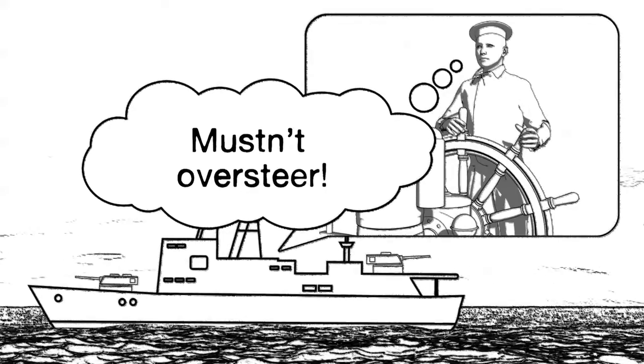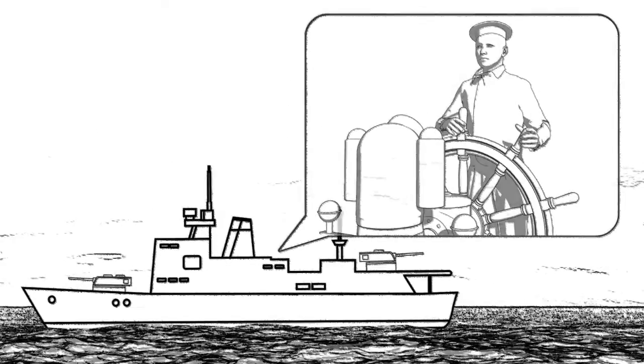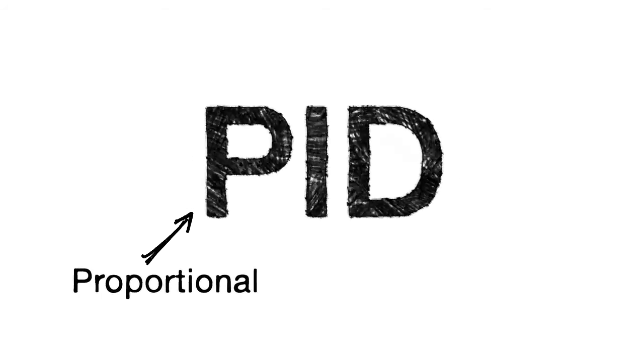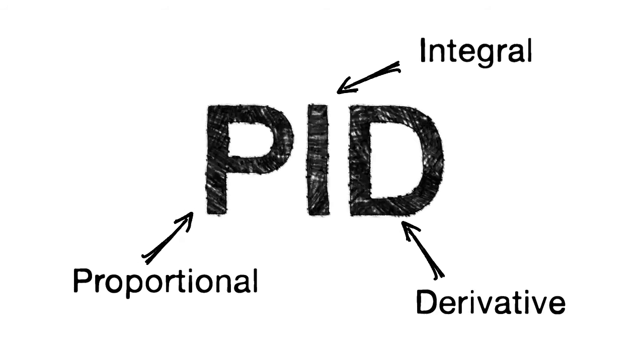Minorski came up with the mathematics that describe these actions and laid the foundation for today's PID controllers. But what does PID mean? P stands for proportional, I for integral and D for derivative.